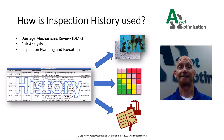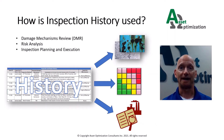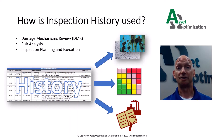Inspection history data is used several ways in risk-based inspection. The summarized inspection and repair history is utilized by the corrosion specialist to identify potential damage mechanisms, rates, and locations. Dates of previous inspections and inspection effectiveness values from the history review are used by the risk analyst for calculating probability of failure for identified potential damage mechanisms. Equipment or component replacement dates from the history could also impact probability of failure calculations.